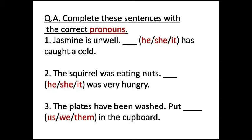The question says: complete these sentences with the correct pronoun. First: 'Jasmine is unwell. Dash has caught a cold.' Which pronoun will we use here? We will use 'she.' Why? Because Jasmine is the name of a girl. Second: 'The squirrel was eating nuts. Dash was very hungry.' Which pronoun will we use here, children? We will not use 'he' or 'she.' Why? Because 'he' and 'she' are used for persons, and a squirrel is not a person — it is an animal. So we will use 'it.'